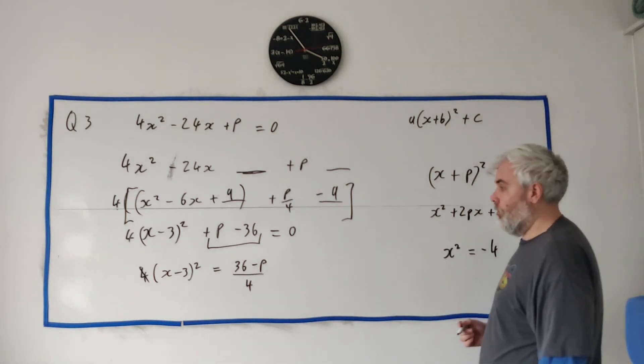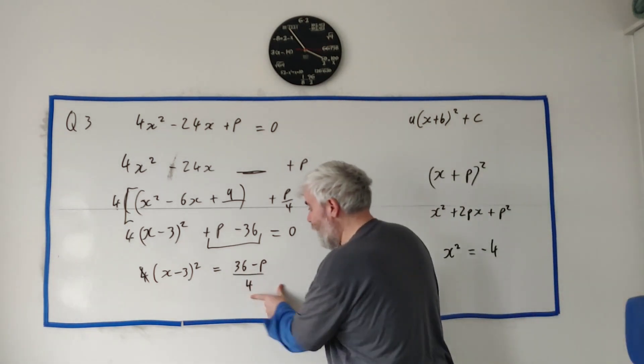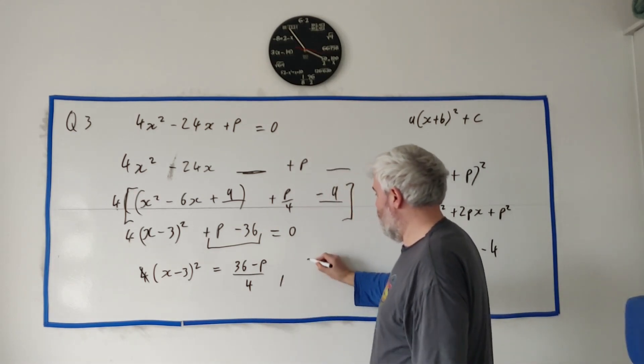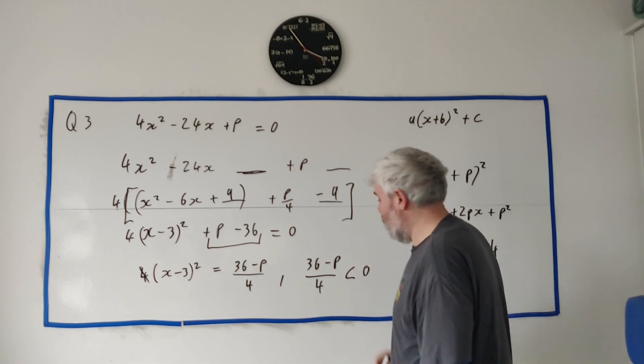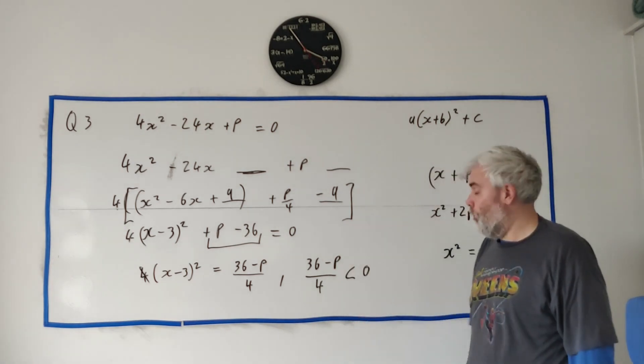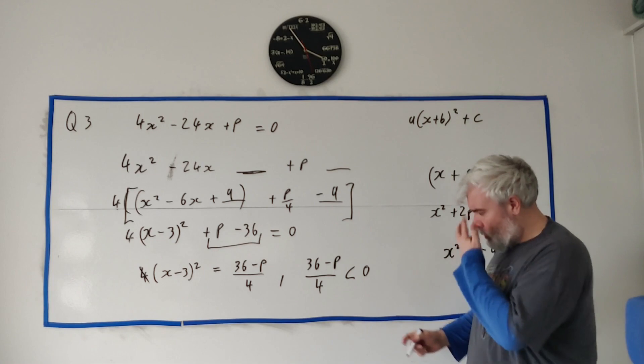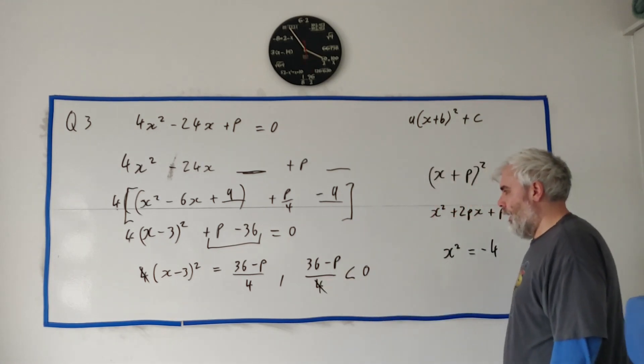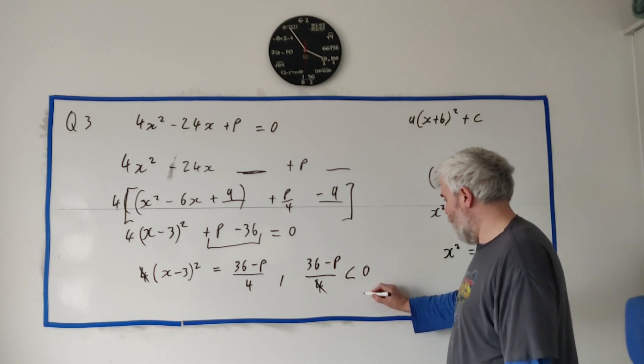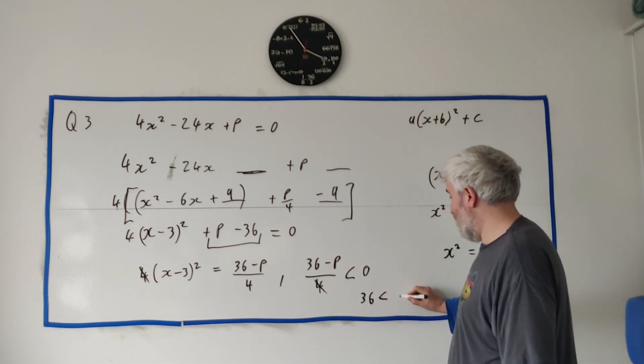So if this, if the right side here is a minus, there's no real roots. If this is a minus, there's no real roots. 36 minus p over 4. If it's less than 0, there's no real roots. And that's what they asked us about. So multiply both sides by 4. It just disappears. Let's see. Let's move the p over. We get 36 is less than p. Or p is bigger than 36.